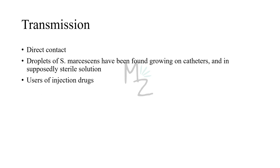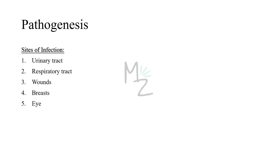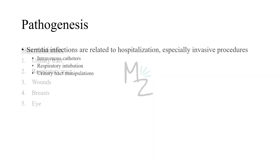Transmission: Serratia marcescens is transmitted via direct contact — if a person contacts S. marcescens on a bathroom wall, they can get the infection. It has also been found growing on catheters and in sterile solutions. It causes endocarditis in users of injection drugs. Sites of infection include the urinary tract, respiratory tract, wounds, breasts, and eyes. Infections are especially associated with invasive procedures such as IV catheterization, respiratory intubation, and urinary tract manipulation. Outbreaks of Serratia pneumonia have been linked to contaminated water in respiratory therapy devices.